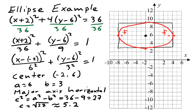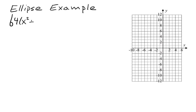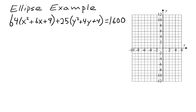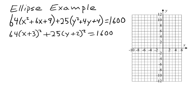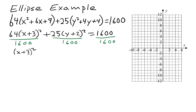For our next ellipse example, we have 64 times the quantity x squared plus 6x plus 9, plus 25 times the quantity y squared plus 4y plus 4, equals 1,600. We remember from standard form that we want x and y in squares. X squared plus 6x plus 9 is a perfect square — it factors to x plus 3, the quantity squared. Y squared plus 4y plus 4 factors to y plus 2, the quantity squared. We then divide through by 1,600: 64 over 1,600 is 1 over 25, and 25 over 1,600 is 1 over 64.